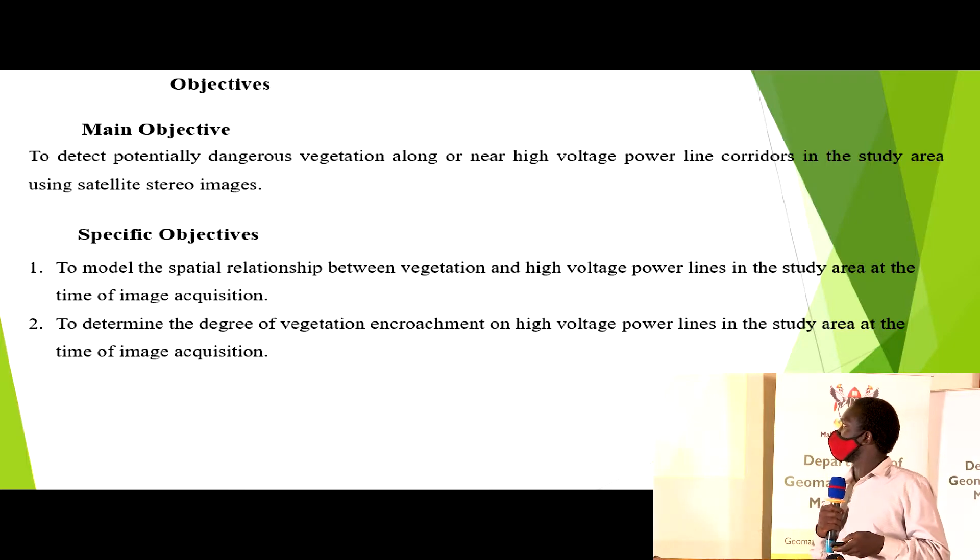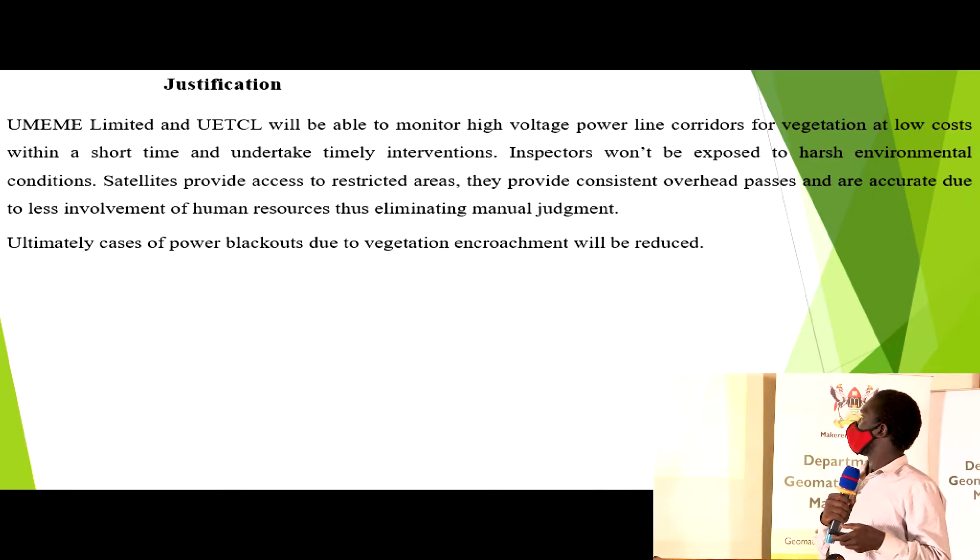My main objective is to detect potentially dangerous vegetation along or near these high voltage lines. The specific objectives are to model the spatial relationship between vegetation and high voltage lines at the time of image acquisition, and to determine the degree of vegetation encroachment on high voltage power lines in the study area.